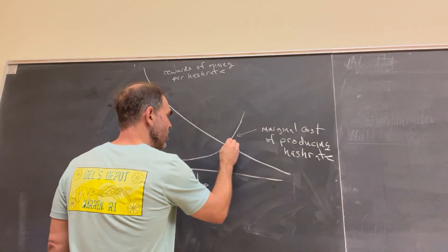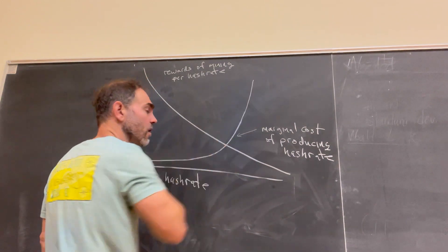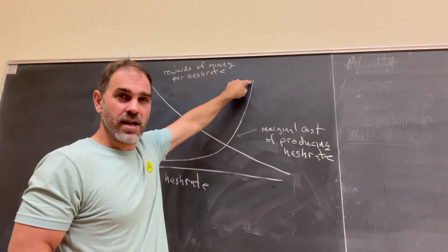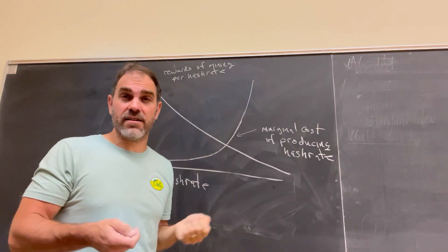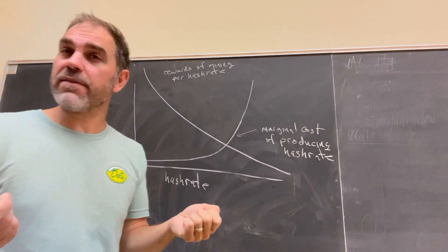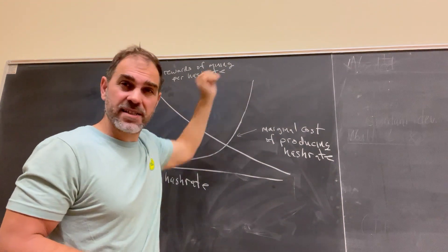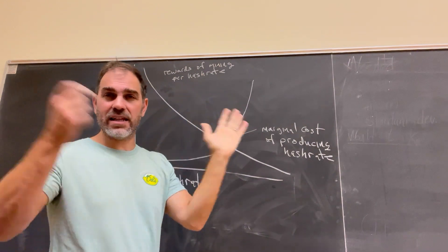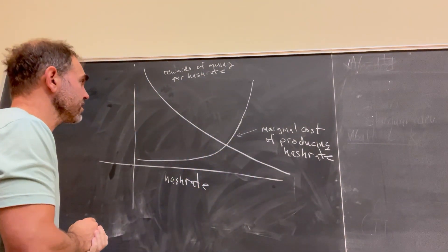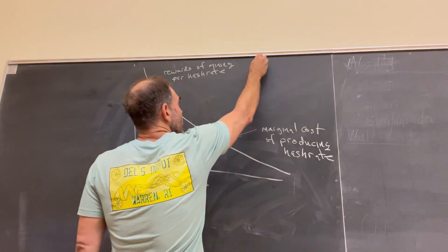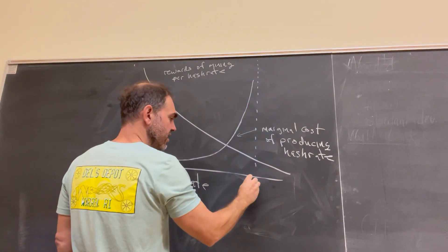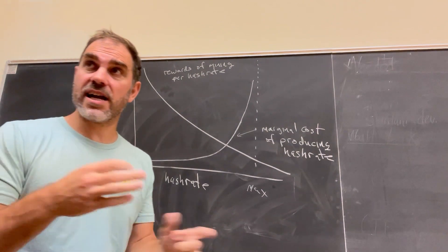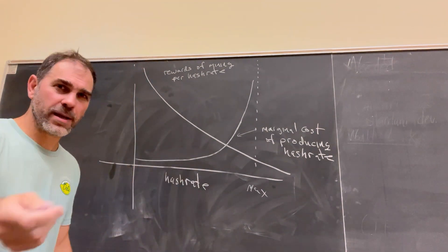So the slope here, as we start to go higher, all of the hashes that are available through any method possible. Like up here somewhere, we have me hashing with my iPhone or something like that, right? It's very expensive. It's not very efficient. It's not going to be profitable unless Bitcoin is astronomically expensive.